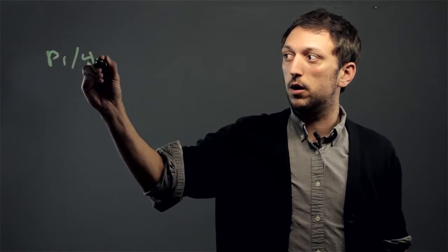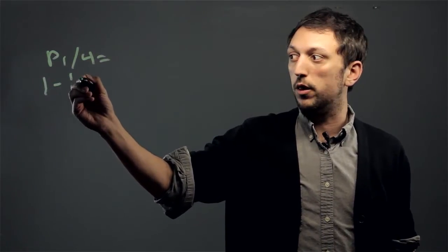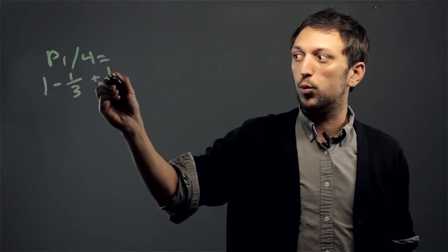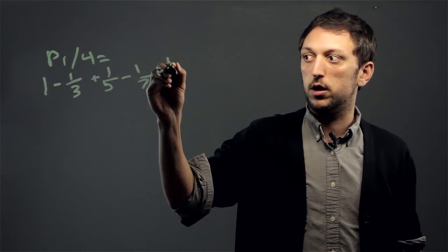The first of these series is pi over 4 equals 1 minus 1/3 plus 1/5 minus 1/7 plus 1/9.